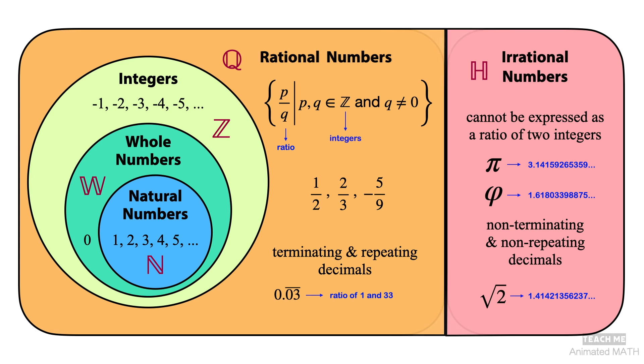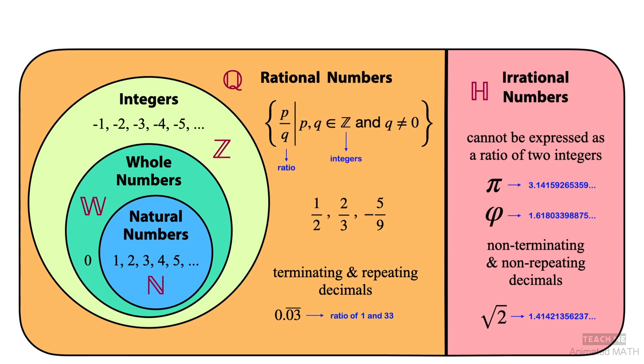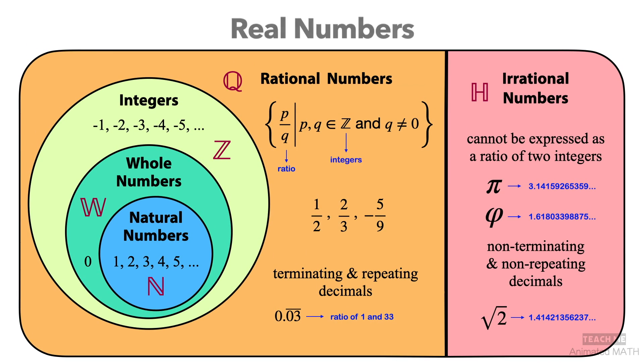The set of rational numbers plus the set of irrational numbers form the set of real numbers. The symbol for the set is a big, bold R.